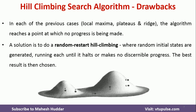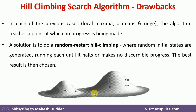Whenever we encounter local maxima, plateaus, or a ridge, we have to use one simple technique to avoid these drawbacks — that is random restart Hill Climbing. The meaning of this is rather than starting at one initial state, we start at multiple initial states and calculate the goal state. The one which gives the maximum value is considered the best path. Rather than considering only one initial state, if I consider multiple starting points, I may avoid the plateaus. So if you do this on multiple initial states, we will get a better solution.